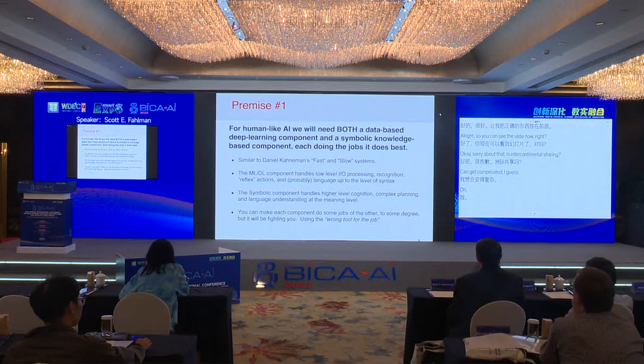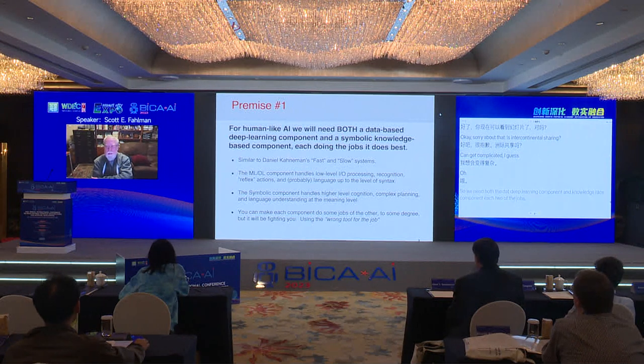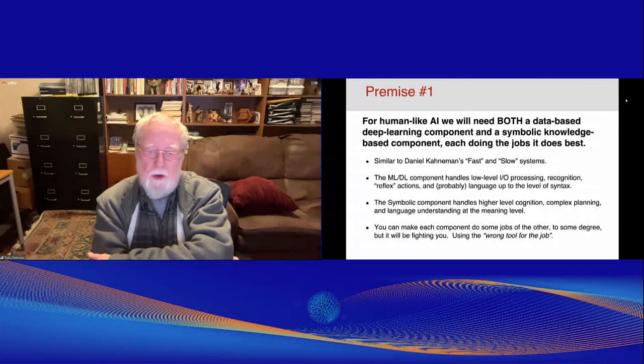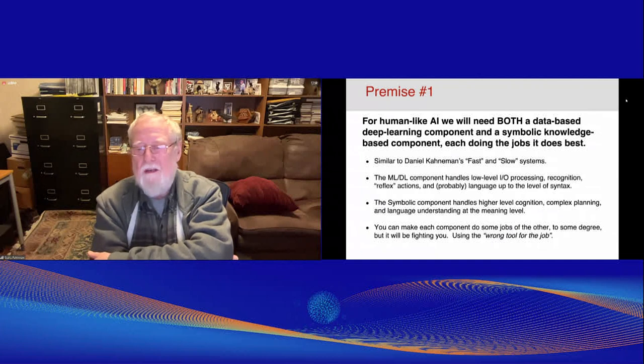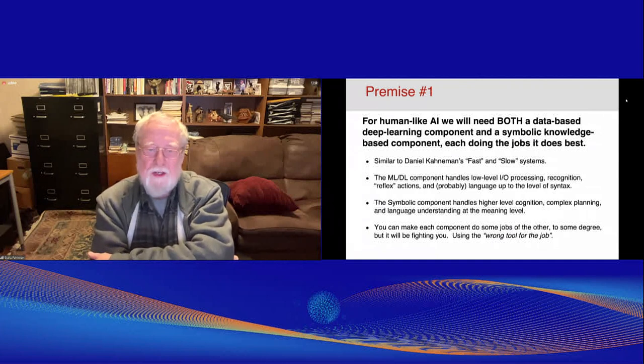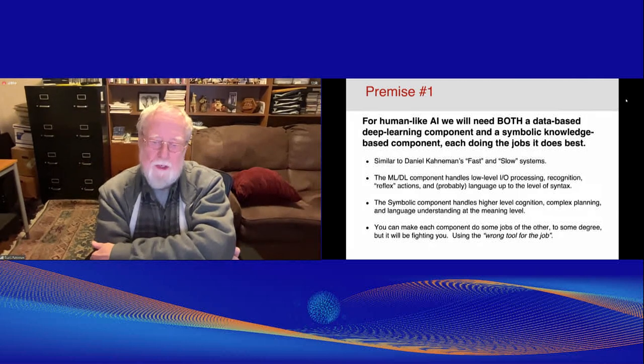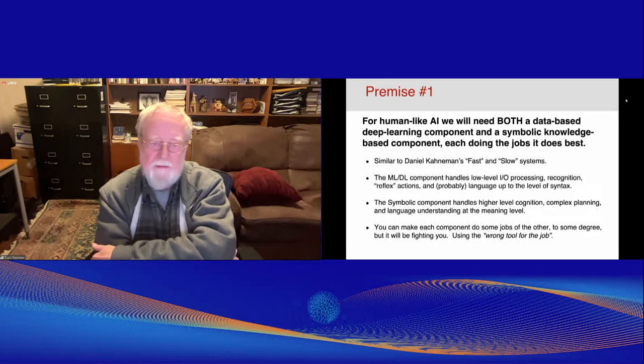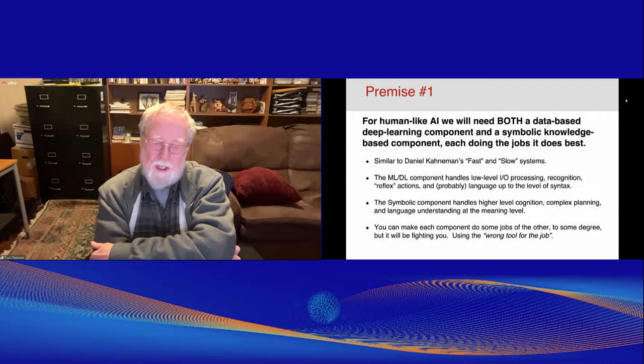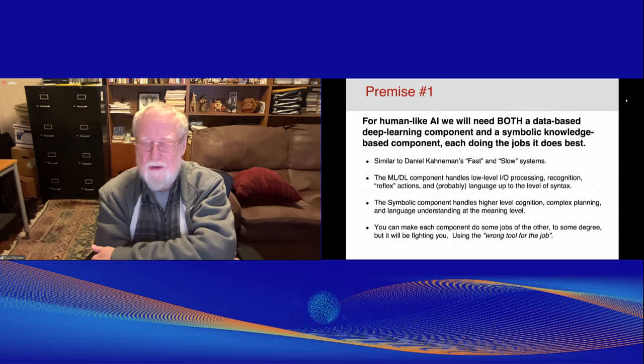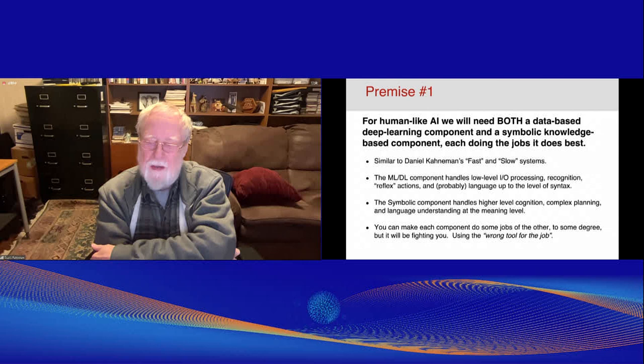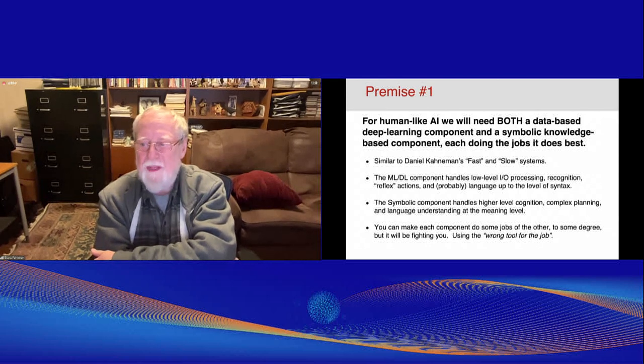We need both the database deep learning component and symbolic knowledge base component, each doing the jobs that it does best. I think the ML, machine learning, deep learning component is very good for handling low-level input-output processing, recognition, this is a cat, reflex actions, this is a bear runaway, and probably language up to the level of syntax. I don't think it's good at capturing the meaning of language. The symbolic component handles higher-level cognition, complex planning, language understanding at the meaning level, and language generation at the meaning level. You can force each component to do some of the jobs of the other, but you will see that it's really fighting you. Trying to use a large language model to capture meaning is really the wrong tool for the job. It can be done, but it's very difficult.